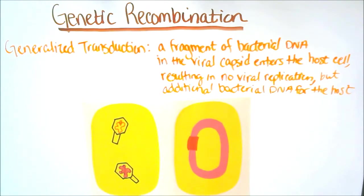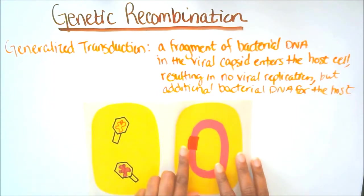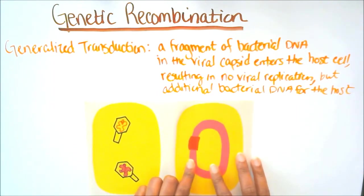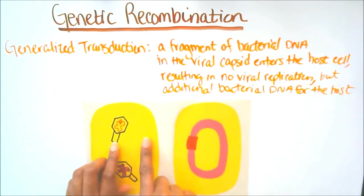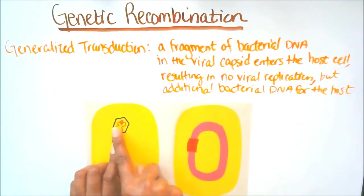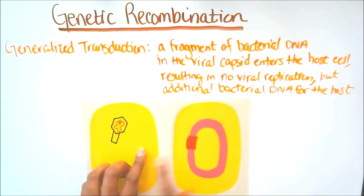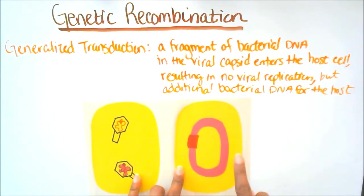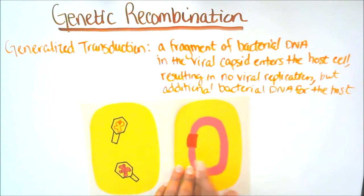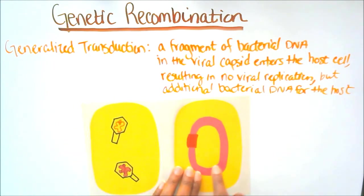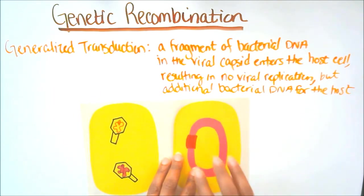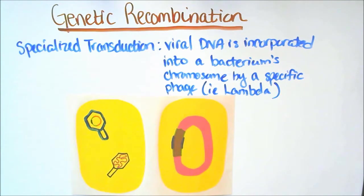Third, we have generalized transduction. The definition is: a fragment of bacterial DNA in the viral capsid enters the host cell, resulting in no viral replication but additional bacterial DNA for the host. Here we have a bacterium, and a fragment of its DNA enters a viral capsid. This virus leaves the bacterium and inserts that bacterial DNA into the host cell. The host cell gets no viral replication — only additional bacterial DNA.